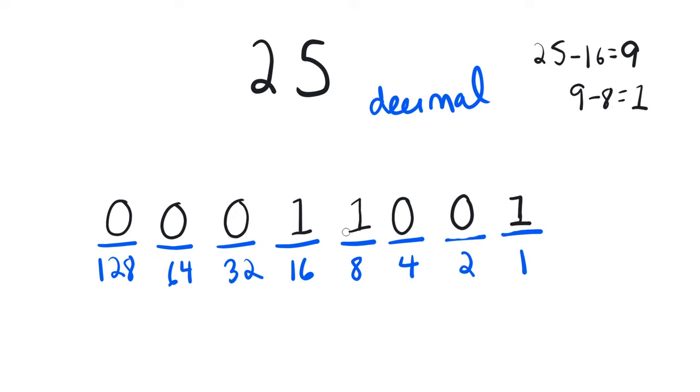So here we have the decimal number 25 in binary. So this required 1, 2, 3, 4, 5 bits. So we would probably represent it in a byte, like this.